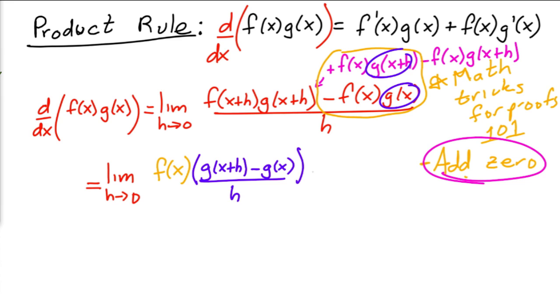And then plus, I'm going to write this as two limits. So I'm going to write this as limit as h approaches zero. Using the limit laws, I can break this up into two limits. Now if I put together these two, the first one and the last one, notice that you can factor out a g(x+h).